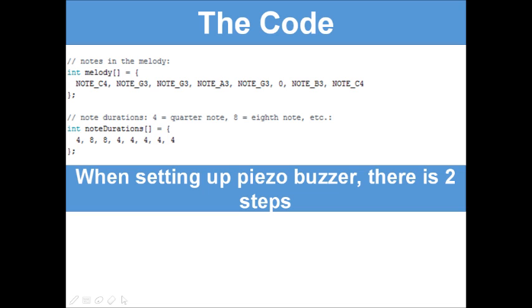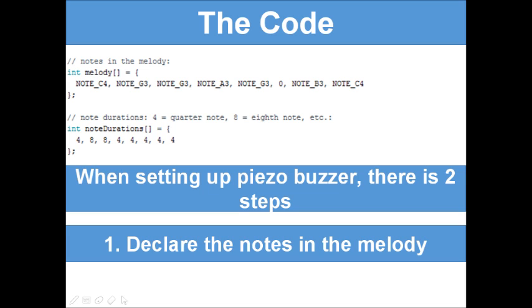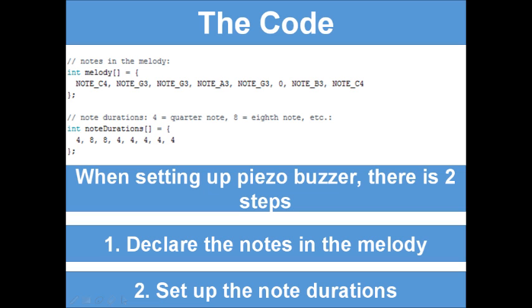Now we know that when we're setting up a piezo buzzer there are two steps. Step one is to declare the notes in the melody, and we've done that by creating an integer variable and putting in the notes. And then step two is to set up the note durations, with 4 being a quarter of a note and 8 being an eighth of a note.